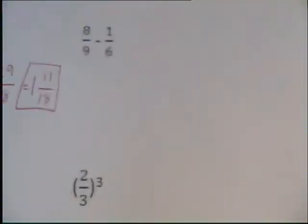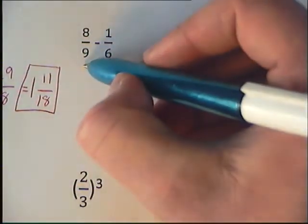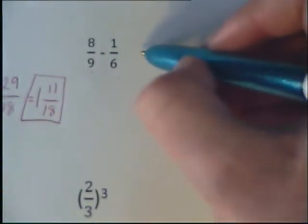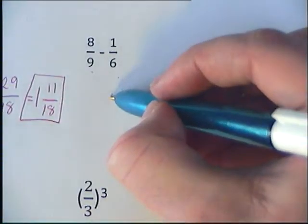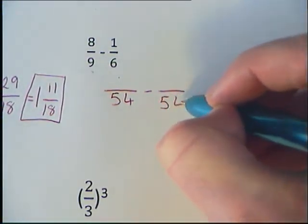Final example, so our taking fractions away. Similar to our adding, again we need our bottom numbers to be the same. So we're going to have 54 on the bottom again, minus 54.